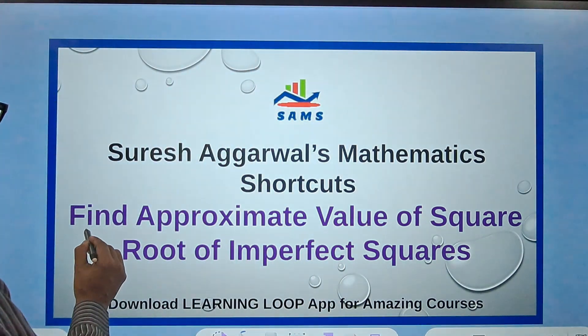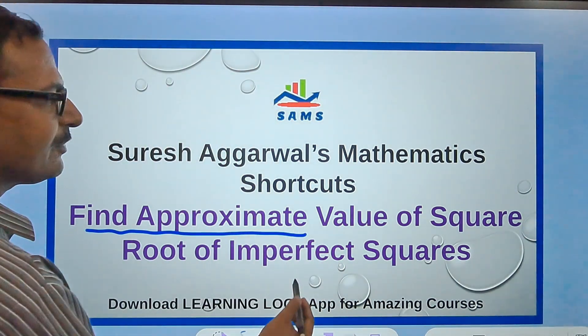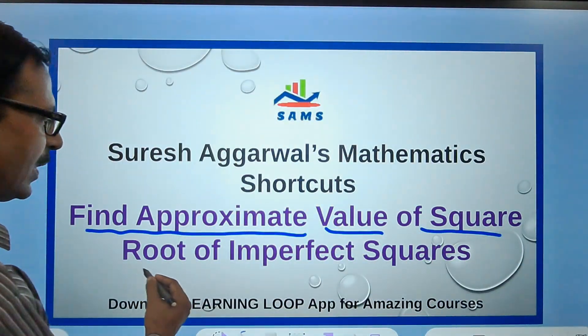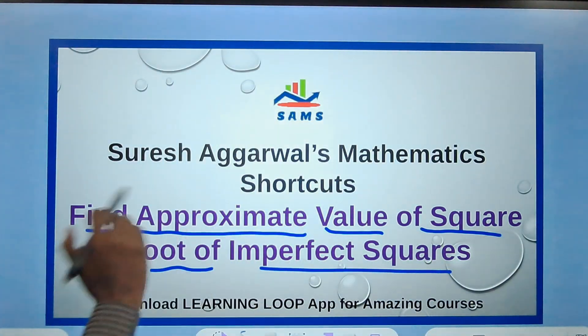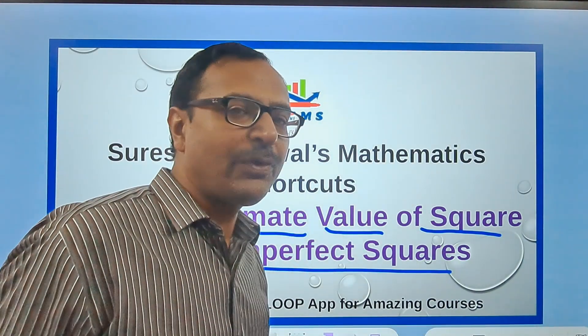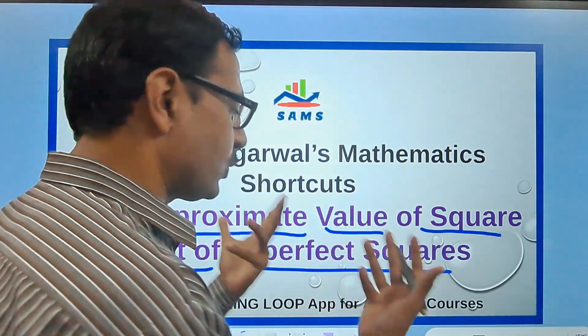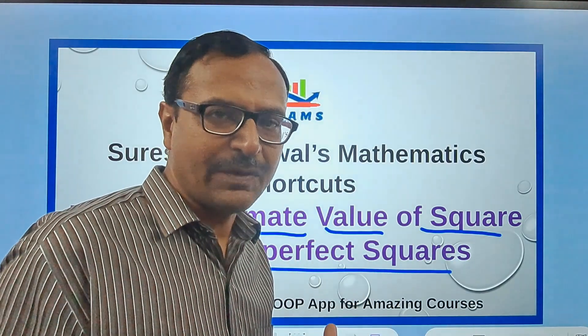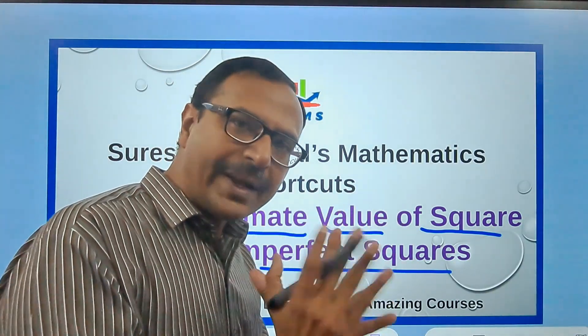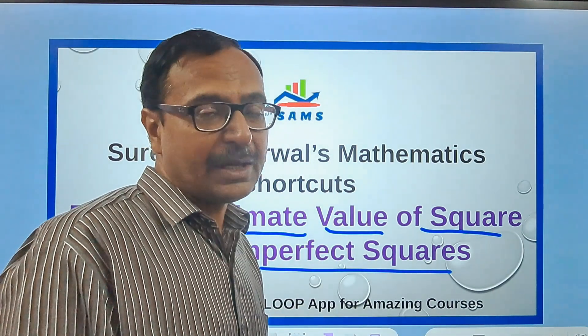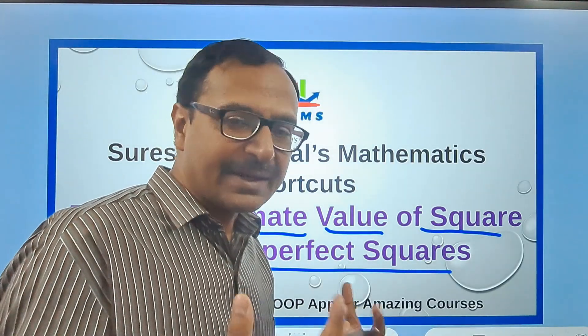In this video we will be finding the approximate value of the square root of imperfect squares. This is really important. We all know many methods of finding the square root of perfect square numbers, but this video teaches you how to find imperfect square roots very close to the actual value. I think it will be accurate up to one decimal place. Watch the entire video and I'll be taking up three or four examples so that you can practice them.